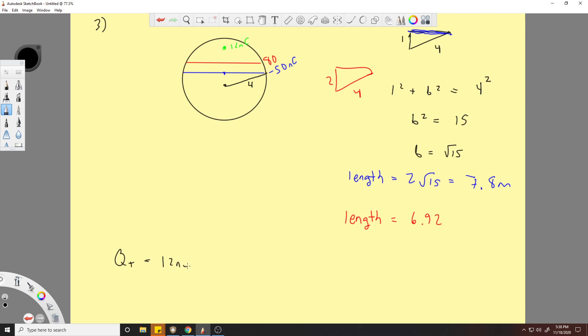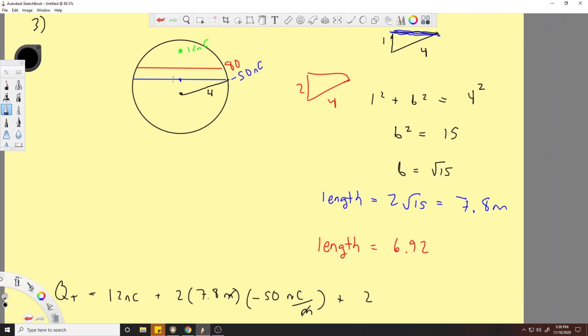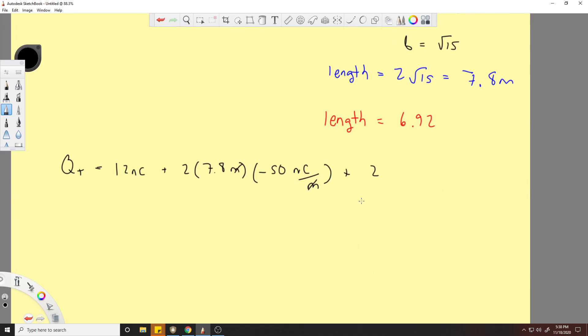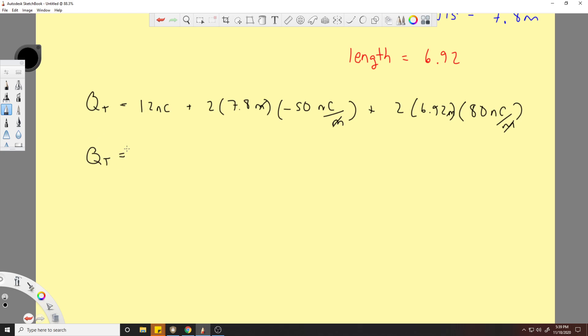So now we end up with the final result of 12 nanocoulombs plus 2 times 7.8 meters times negative 50 nanocoulombs per meter - these are going to cancel to give you nanocoulombs - plus 2 times 6.92 meters times 80 nanocoulombs per meter. Meters are going to cancel again. So now q total is equal to 339 nanocoulombs. Hope that helps, goodbye.